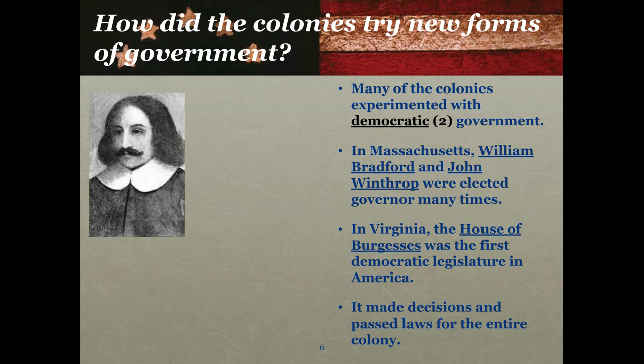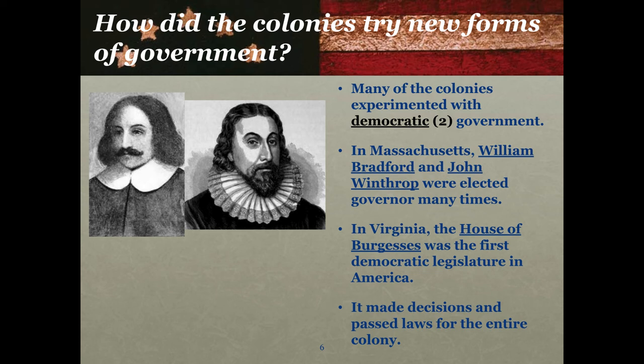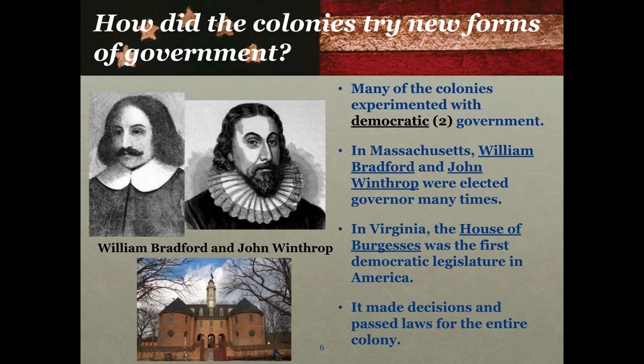There you have Mr. Bradford on the left and Mr. Winthrop on the right. What they're wearing reminds me of what Waldo's dress code should be like. And there we have a picture of the building where the House of Burgesses met in Virginia, which is a national historic landmark. If you're ever in Virginia you can go by and say this is where the first democratic legislature in the Americas met.